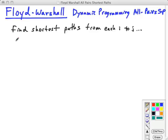It's going to first start by finding shortest paths that just go directly. Then it'll find shortest paths between i and j that either go directly or via vertex one.